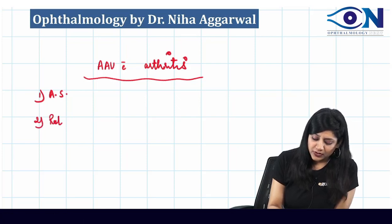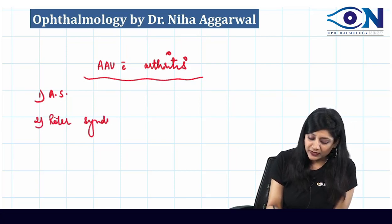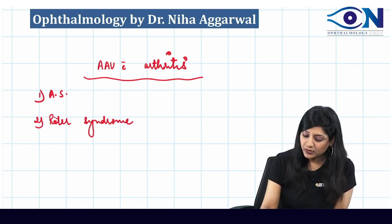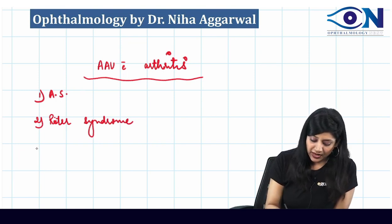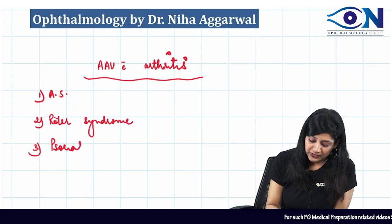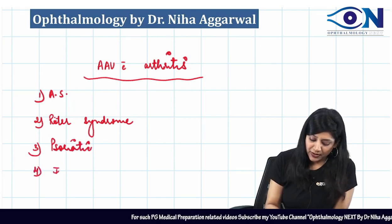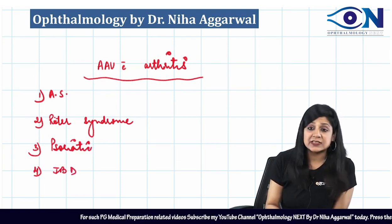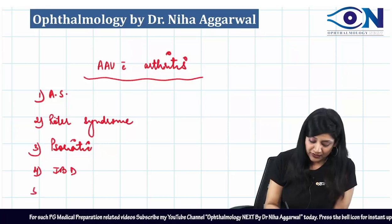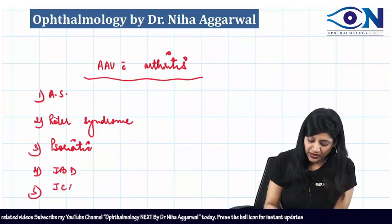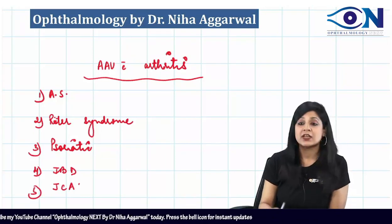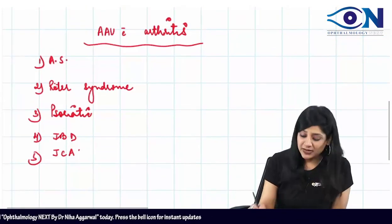Can you recall the triad of Reiter's syndrome? We can also have psoriatic arthropathy, then inflammatory bowel disease, and number five, juvenile chronic arthritis.